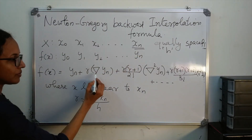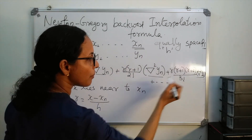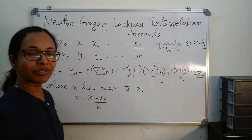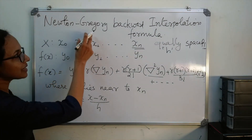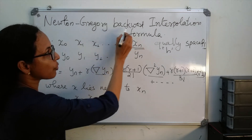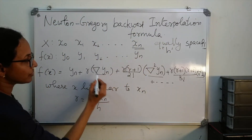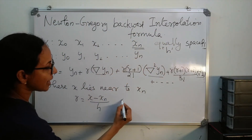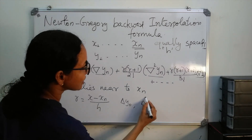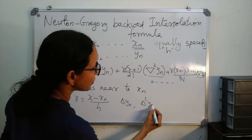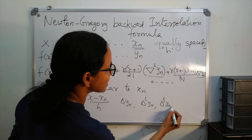These terms are known as backward differences. In the Newton-Gregory forward interpolation formula, instead of these terms we had delta y naught, delta squared y naught, delta cubed y naught, etc.